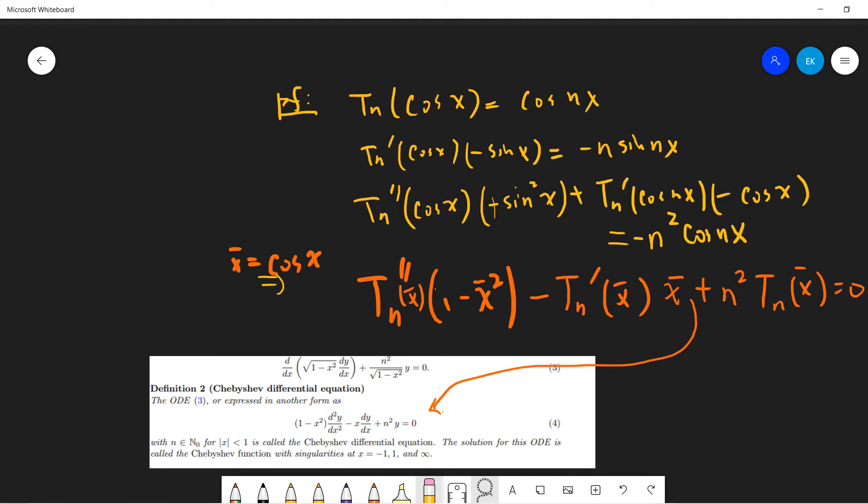And finally, we just let x bar equals to cosine x. So the first term is just Tn double prime, 1 minus x bar squared, because 1 minus cosine squared is sine squared. And this term is minus, because there is a minus sign here. And then this is cosine, cosine is just the x bar. By our simple calculation, plus n squared Tn. Cosine nx is defined to be this, so it's Tn.